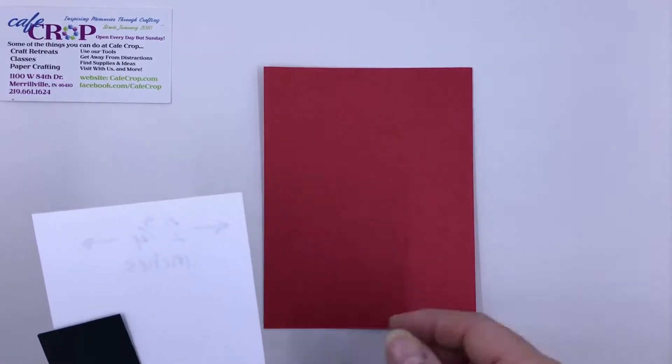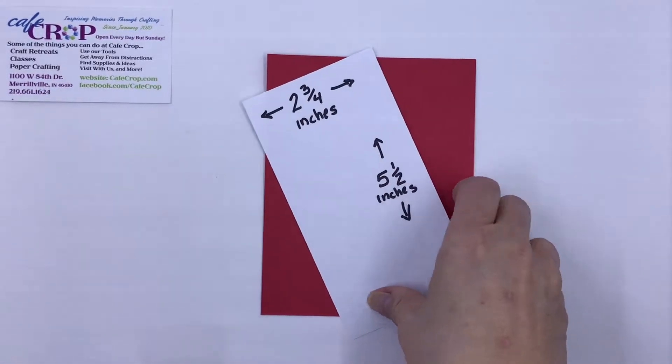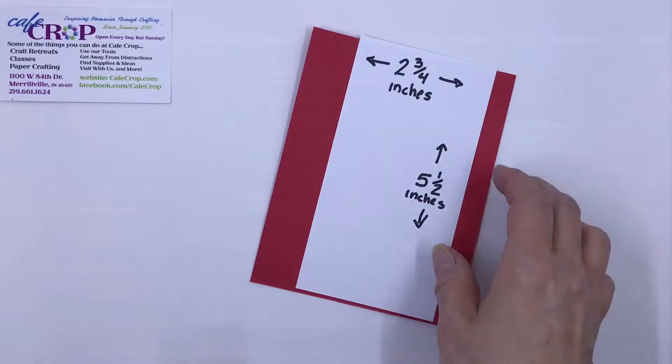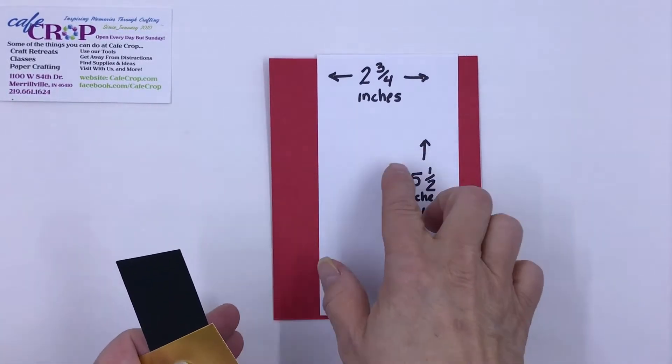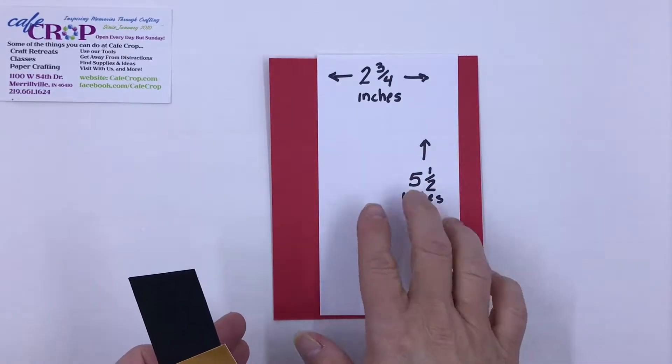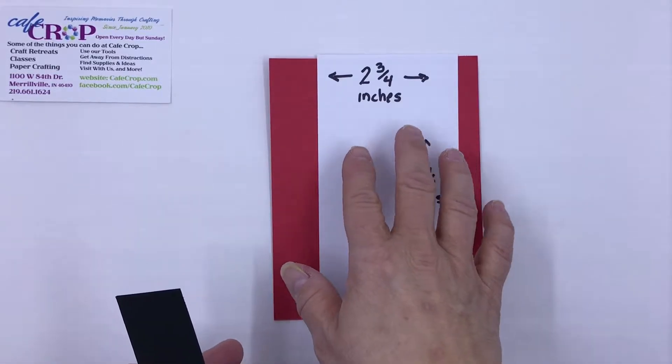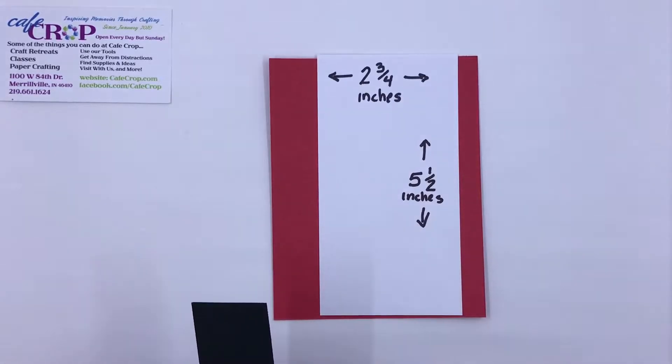We need a piece of white that's approximately two and three-quarters inches wide and five and a half inches high. This can be whatever you've got a scrap of or something, because we're going to be tearing the edges on this anyway.